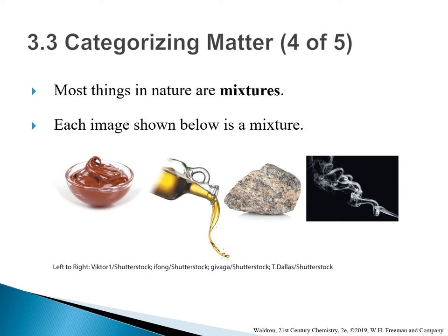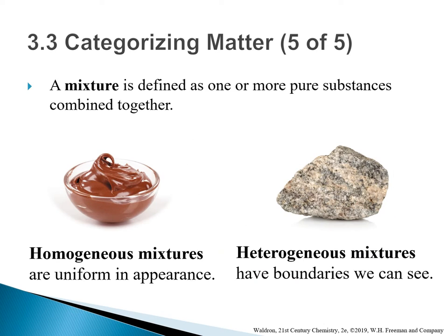Most things in nature are mixtures. Here are a few examples: chocolate pudding, olive oil, granite, and cigarette smoke. Mixtures can also be separated into two subcategories: homogeneous mixture versus heterogeneous mixture. Since a mixture is defined as one or more pure substances combined together, a homogeneous mixture is uniform in appearance, like chocolate pudding. On the other hand, a heterogeneous mixture has boundaries we can see, like in granite.